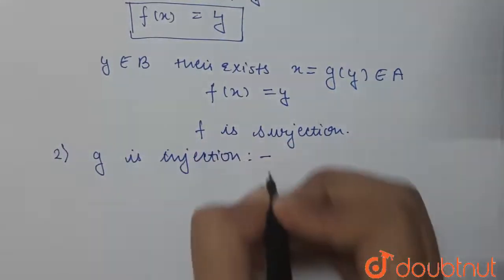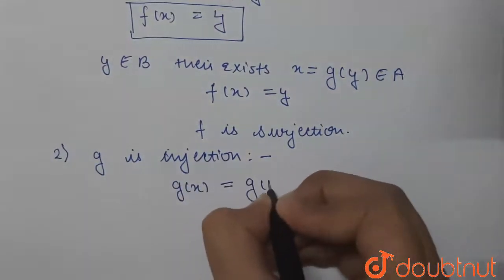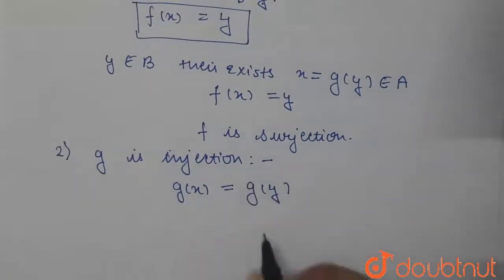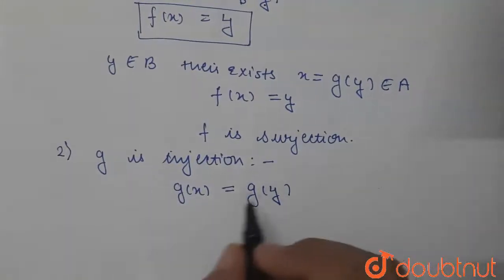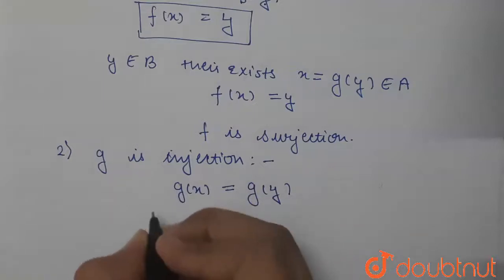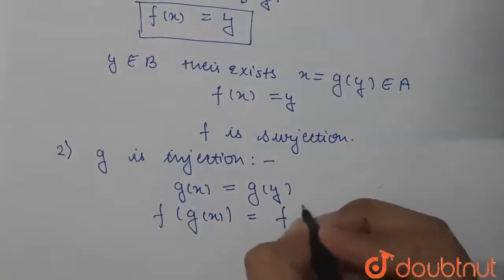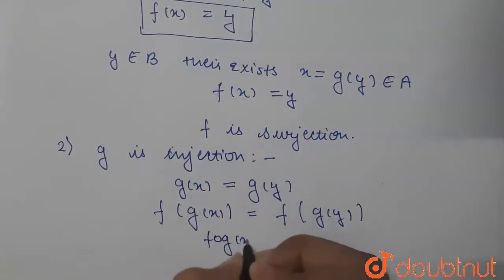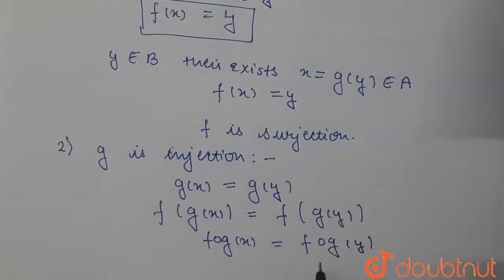Now let's prove that g is an injection. We assume g of x equals g of y, and we need to prove that x equals y. Applying f to both sides, we get f of g of x equals f of g of y, which can be written as fog of x equals fog of y.